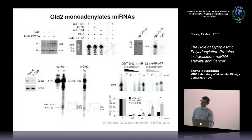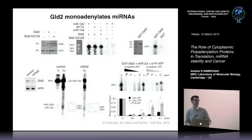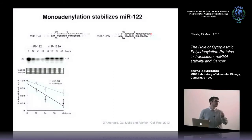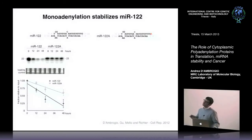To see whether this additional A makes the microRNA more stable, I first tried northern blots but then developed a different system. I pre-annealed in vitro the microRNA either without or with an additional A, labeled it radioactively, transfected it into cells, and monitored its stability over time. The non-adenylated microRNA decays fast within two days, while the adenylated one persists in cells. This was confirmed by quantification across multiple experiments.